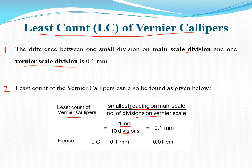If we divide 1 by 10, we get 0.1 mm. Hence, least count of the Vernier Calipers equals 0.1 mm. But for all measuring and practical purposes, this least count is always expressed in centimeters. So the least count of the Vernier Calipers equals 0.01 cm.